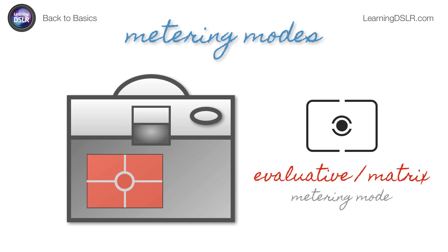Finally, the default and most popular metering mode is very rich in algorithm with a lot of electronic processing. It's called evaluative metering in the Canon world and matrix metering in Nikon. Your camera splits the scene into various zones, still with a center focus, and if it sees the sun in the top left corner, it knows that's a bright quadrant that doesn't necessarily affect the others. It balances everything out to make its best estimation of how the scene should be metered. This is your default metering mode — you'll see that icon on the top or back of your camera all the time.